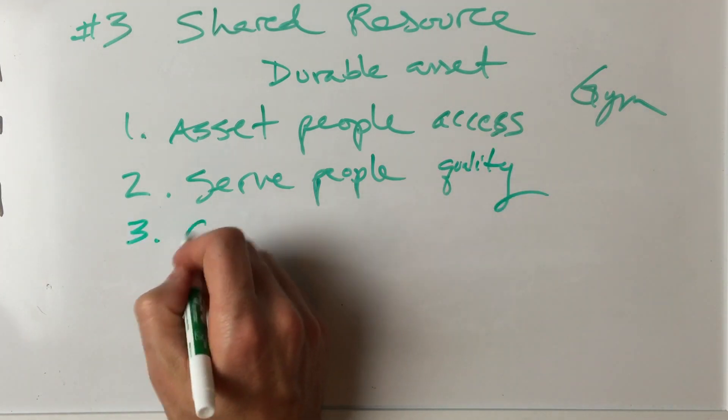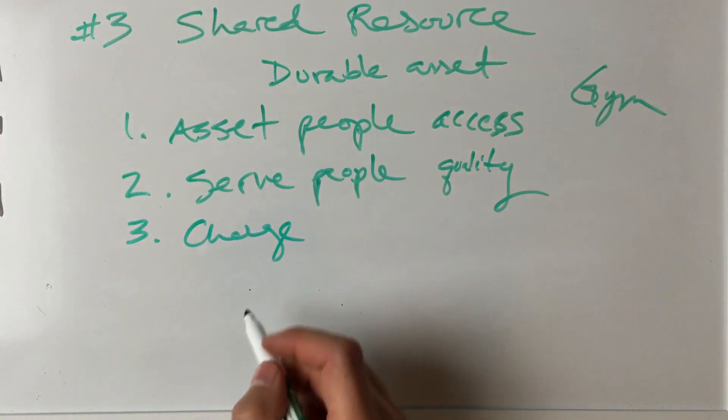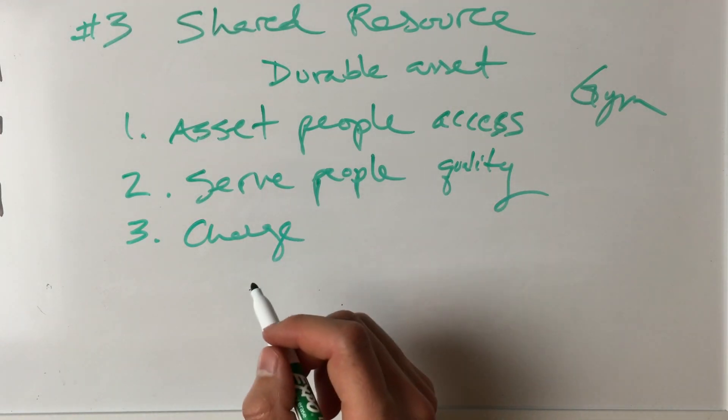And then number three, you charge them, you maintain the resource and rinse, wash, repeat, whatever it is.